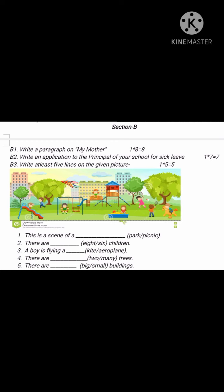The next question is picture composition. It is of 5 marks. It has been given in blank form, so quickly do it. First: 'This is a scene of a park' — park is the correct answer, not picnic. Second: 'There are 8 children' — you have to count: 1, 2, 3, 4, 5, 6, 7, 8 — yes, 8 children. Next: 'A boy is flying a kite.' Next: 'There are many trees' — you can't count them all, so write many trees. Next: 'There are big buildings.' In this way you have to do it in your fair notebook.